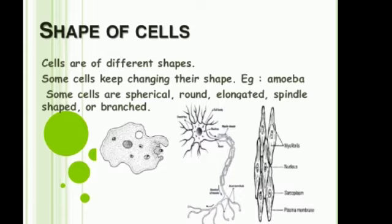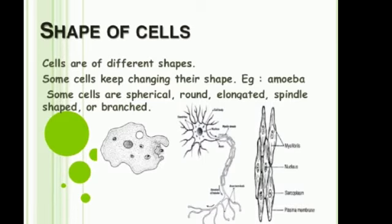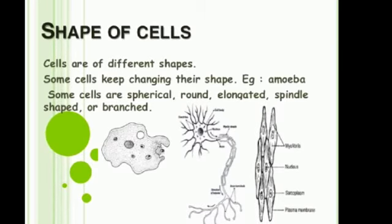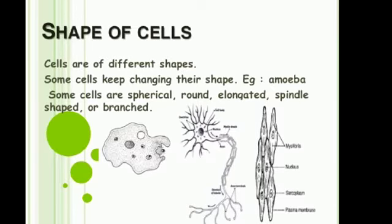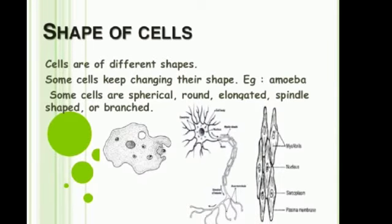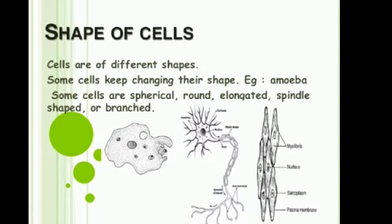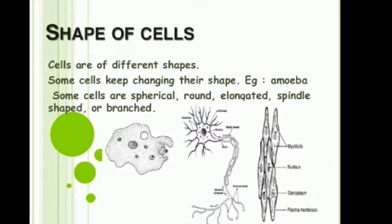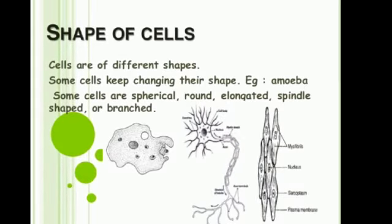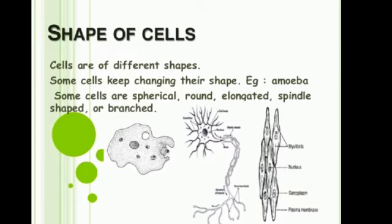Cells are of different shapes. Some cells keep changing their shapes — wo apne shape badalte rehte hain — but not all cells. Kuch cells jo hote hain wo fixed hote hain, like plant and animal cells; wo shape ko change nahin karte. But some cells like the amoeba and the euglena change their cell shape.